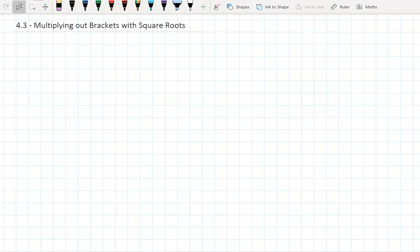Alright, what we're going to look at now is multiplying out brackets when we have square roots. Okay, now obviously, firstly we need to talk about multiplying out brackets. So we're going to write some rules over here on the right.